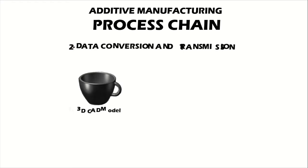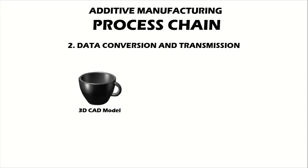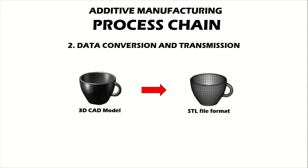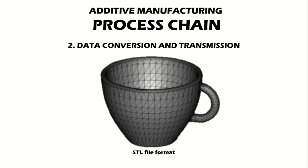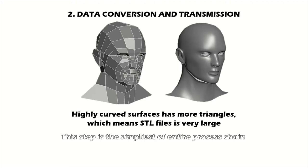The CAD model is next converted into a format known as the STL file format. STL is the abbreviation for Standard Tessellation Language, also known as stereolithography. The STL file format approximates the surfaces of the model using tiny triangles. If the 3D model is complex or has highly curved surfaces, we must employ many more triangles, which means that STL files for curved parts can be very large.